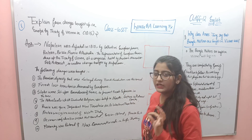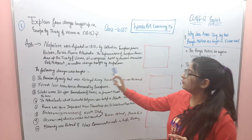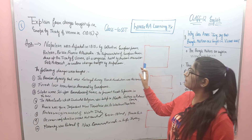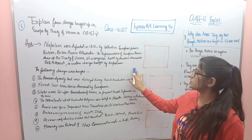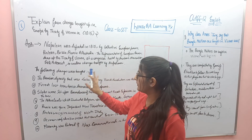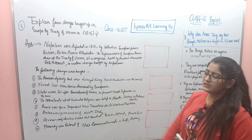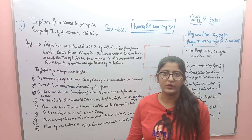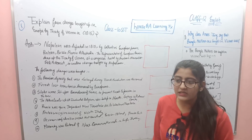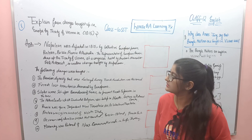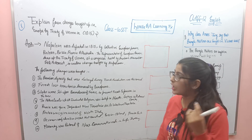Britain, Russia, Prussia, and Austria — the representatives of European power — drew up the Treaty of Vienna at a Congress hosted by Austrian Chancellor Duke Metternich, to undo the changes brought up by Napoleon. First, you will read it. You will then know what happened in this question.